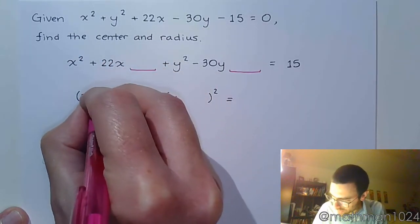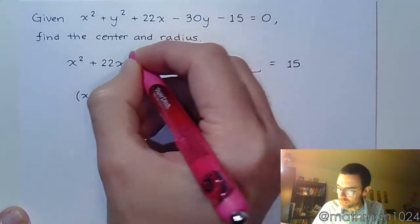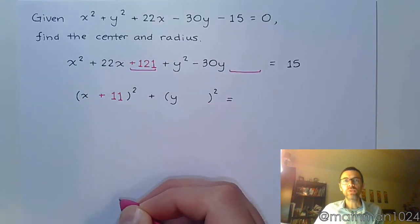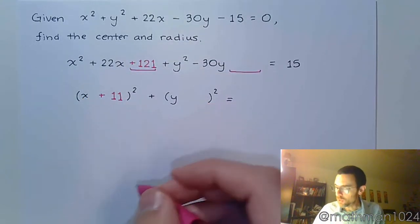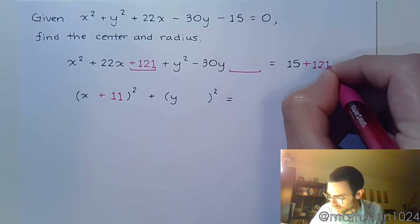So we do half of 22, which is 11. We'll put the plus 11 inside. And 11 squared is 121, so 121 right here. I'm putting 121 in the gap, which means I must also put the 121 here on the right side as well.